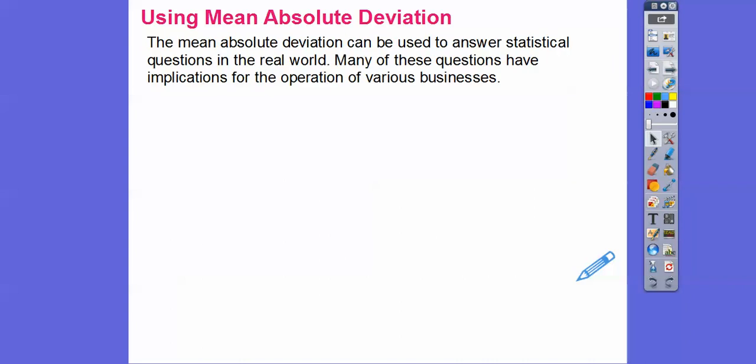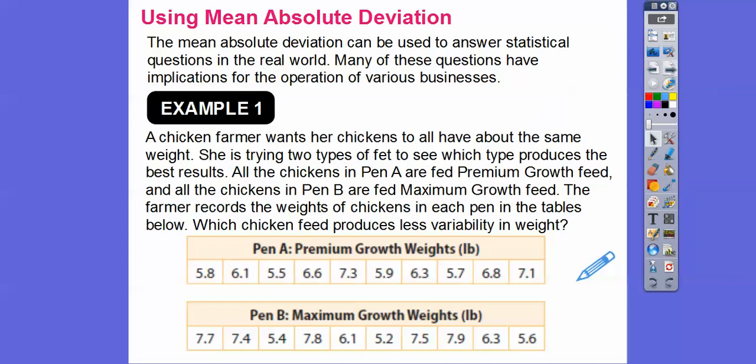The mean absolute deviation can be used to answer statistical questions in real world type problems. Many of these questions have implications for operations of businesses. If you're doing some statistical analysis of stuff that costs you millions and millions of dollars, you want that MAD to be as low as possible. It could be more accurate of the data.